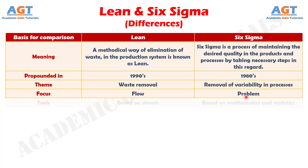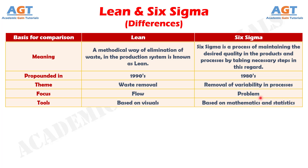Difference Number 5: The tools used by Lean are based on visuals, whereas the tools used by Six Sigma are based on mathematics and statistics.